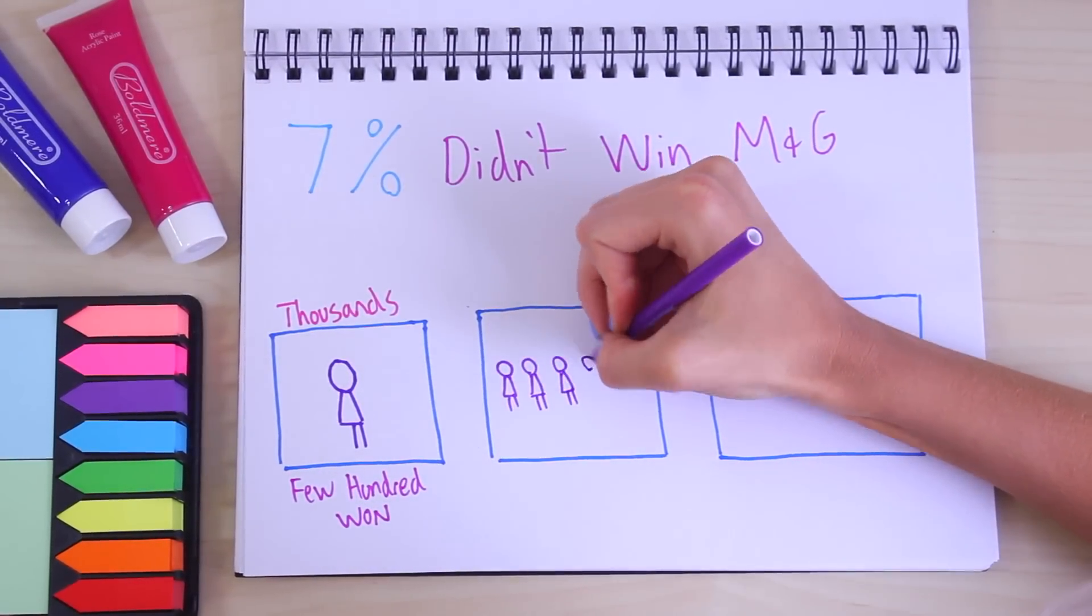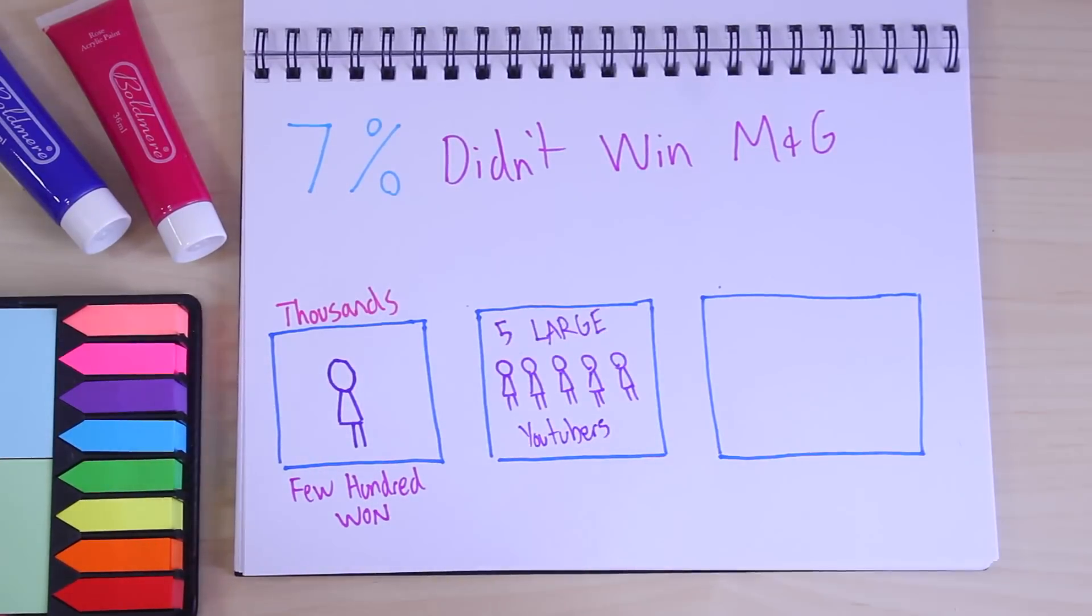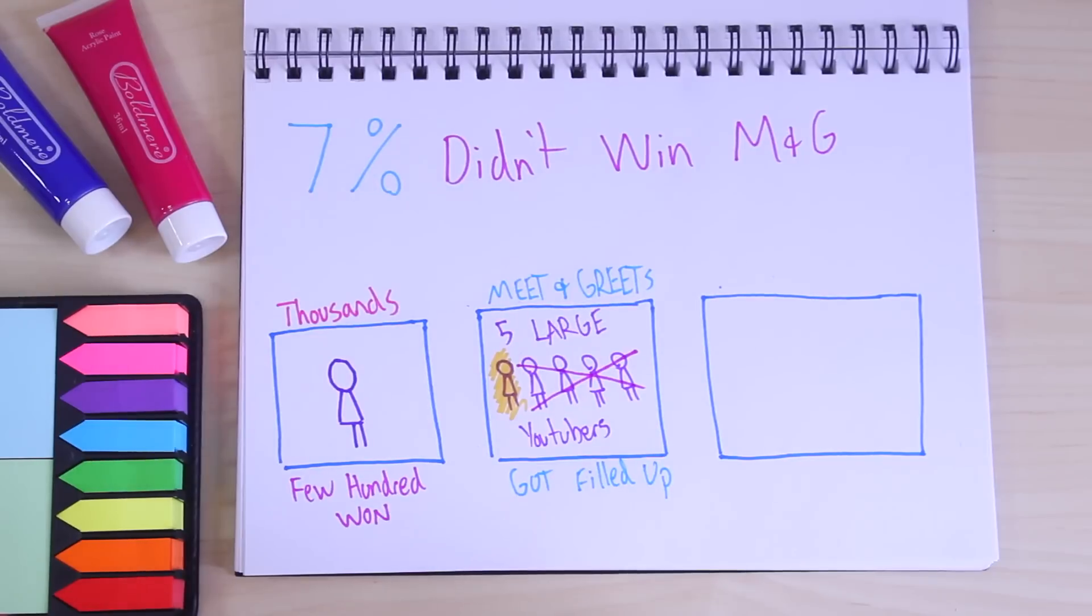The other thing that happened was kind of similar where they did go ahead and fill up their meet and greet full of 5 people, but they were all 5 large YouTubers. So the person they put in the first spot did get put into the ballot, but the rest of the 4 YouTubers' ballots got filled up on the first draw because they were just so popular.